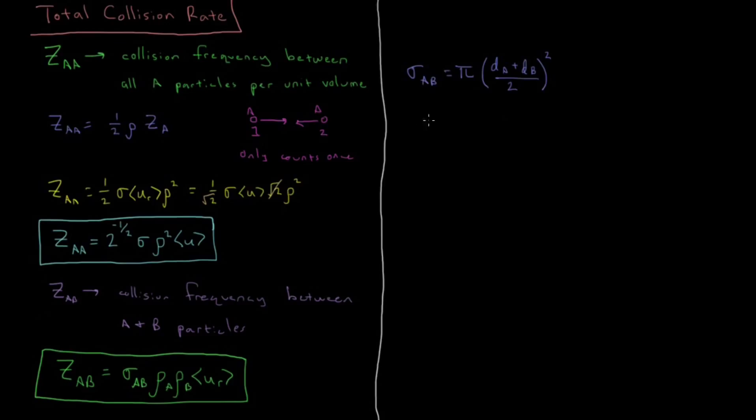For the relative velocity to one another, that ends up being the same. That is going to be 8KT over pi times reduced mass.